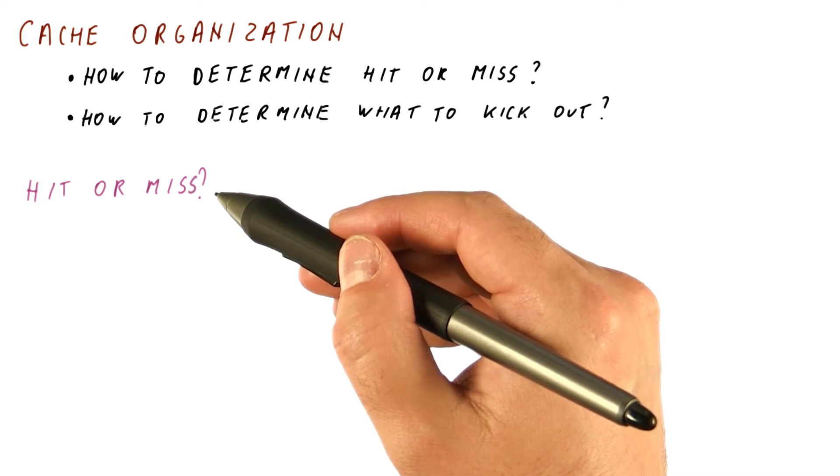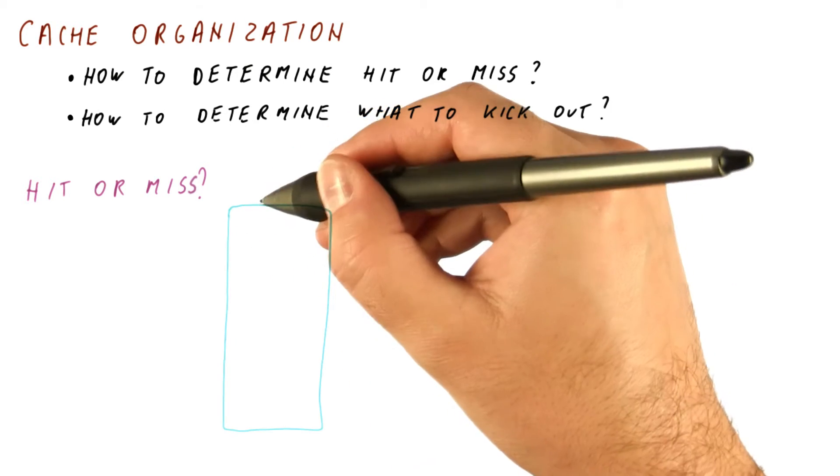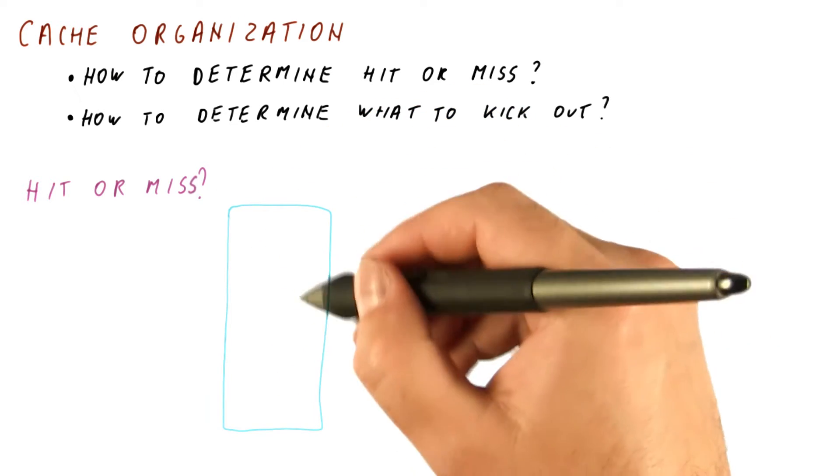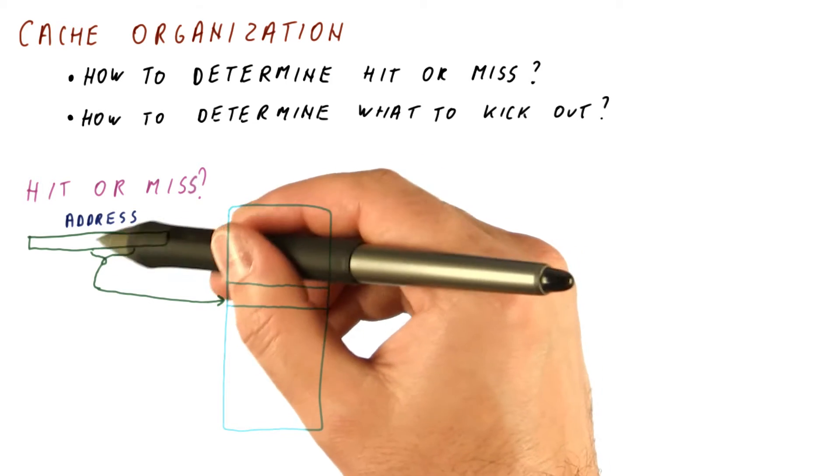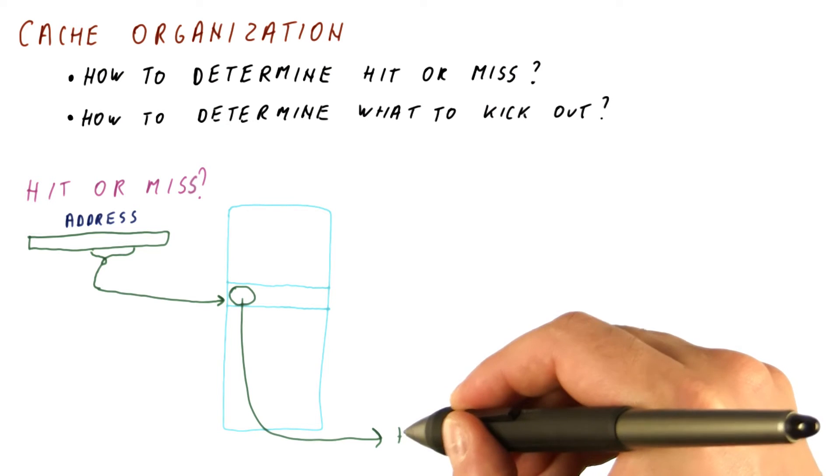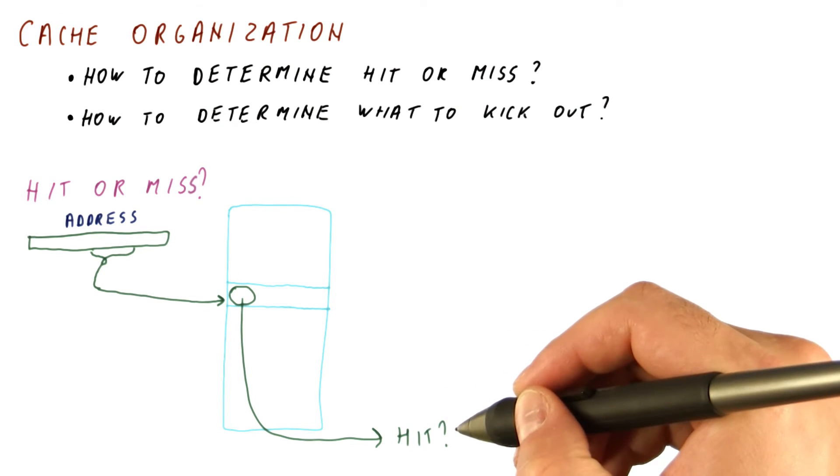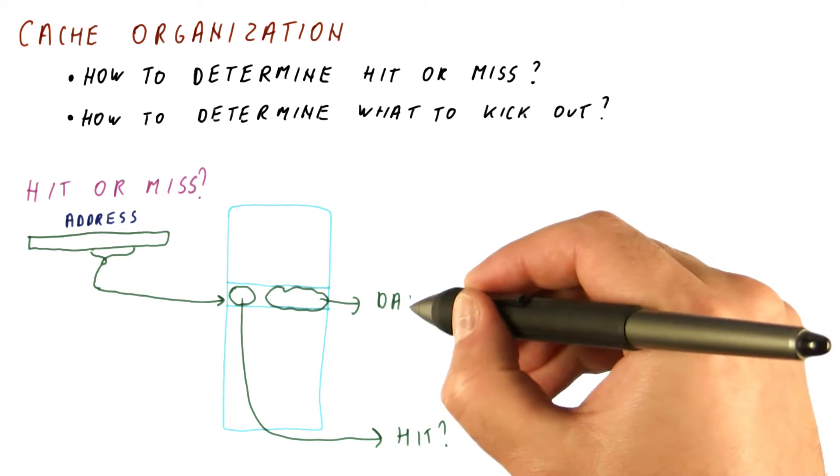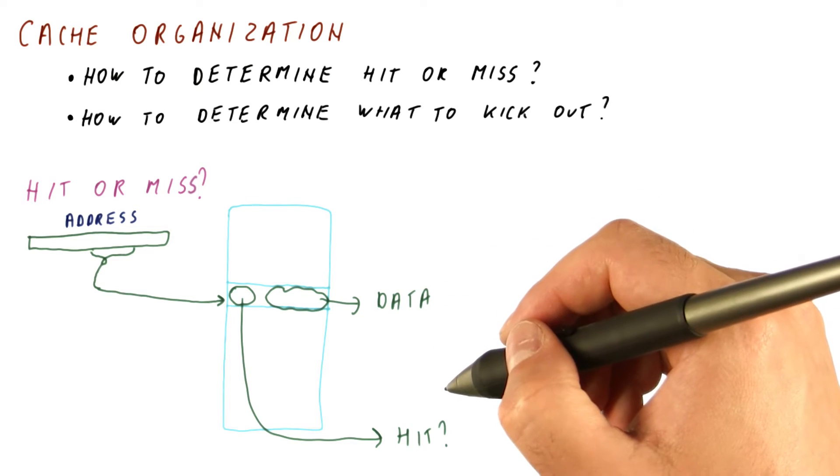And if we do have what we are looking for, then it gives us the data. So conceptually, the cache is a table which we index with some bits that we take from the address of the data. So some stuff here needs to tell us whether we have a hit, and the rest of the stuff here is the data we want if we do have the hit.